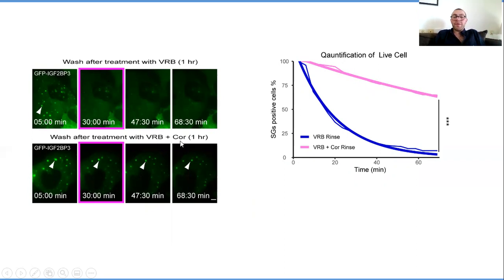However, when we treated with VRB and cortisone and then tried to rinse out the treatment, we saw the stress granules linger. And this impaired clearance is something that's linked very heavily to many different pathologies. And we see that throughout the entire treatment, the stress granules are still there.